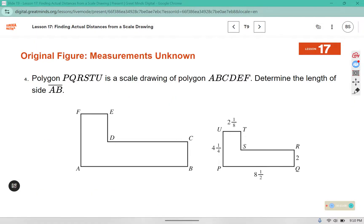Look at this diagram from question 4. It says polygon PQRSTU is a scale drawing of polygon ABCDEF. Determine the length of side AB. I don't have any original side lengths to go off of, so I can't create a scale factor, but maybe I can find some other relationship within the picture to help me answer this question.